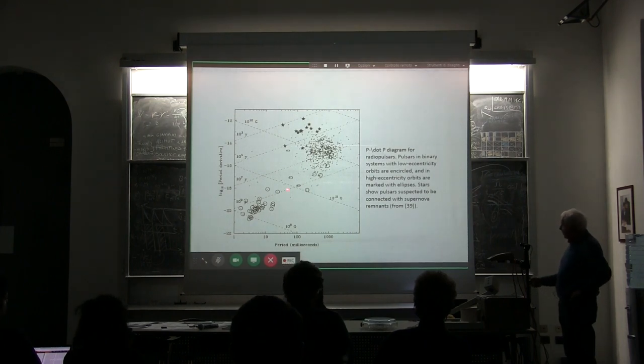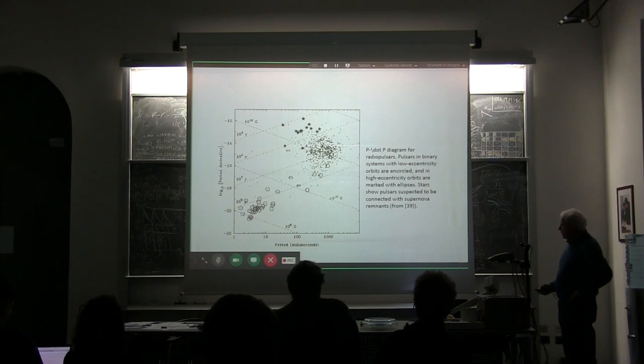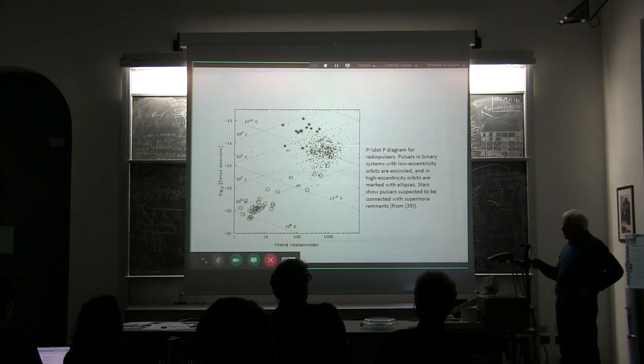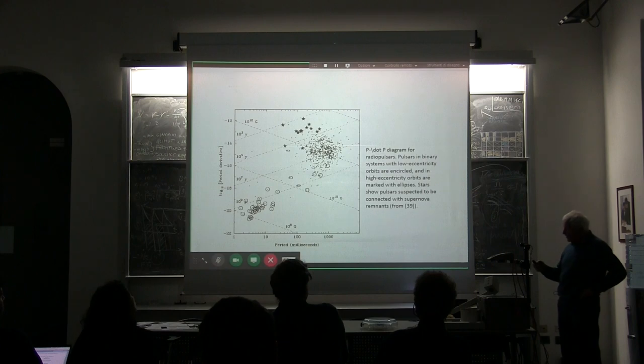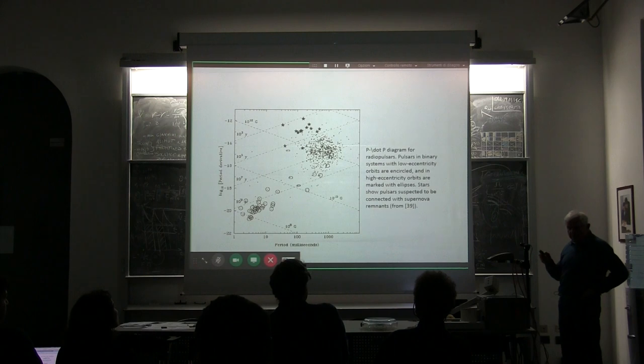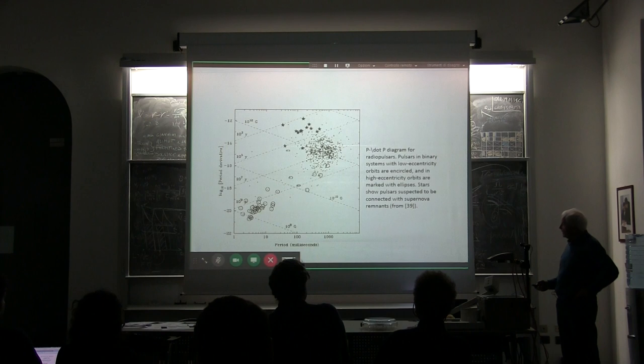Then another much smaller collection is of recycled pulsars, which goes through the stage of accretion, during which the magnetic field is decreased and rotation is increased. Some of them are binary, some are single. You see they have very low magnetic field and very rapid rotation.